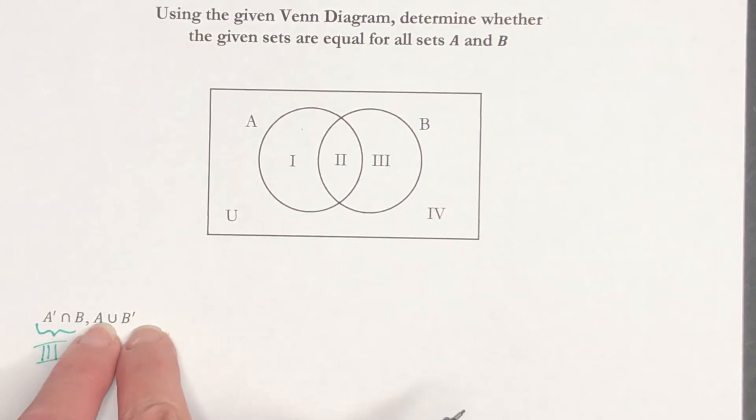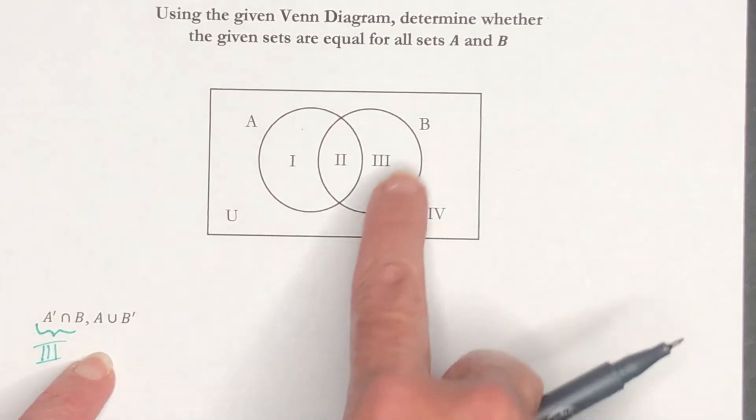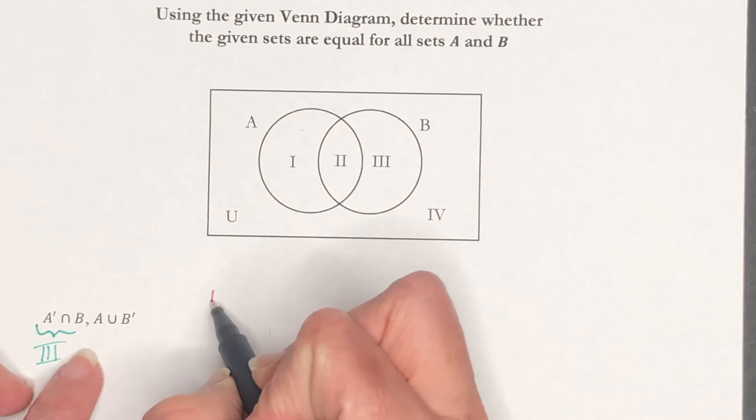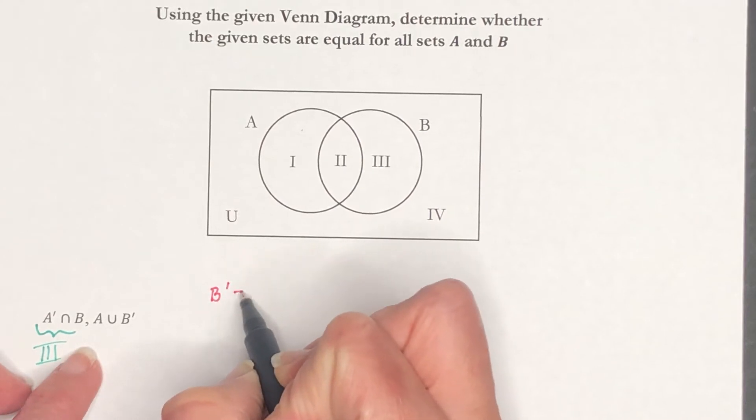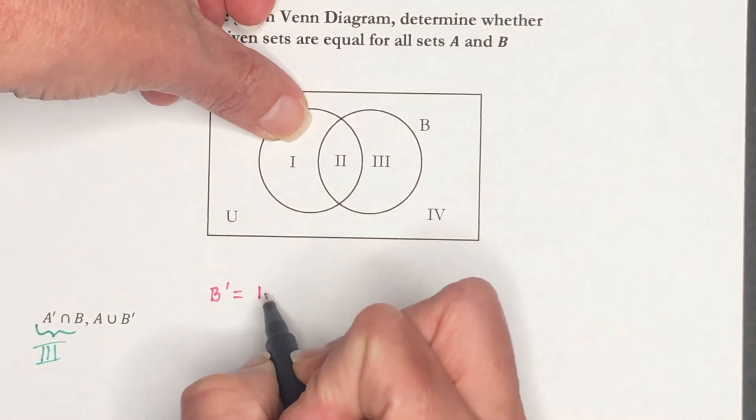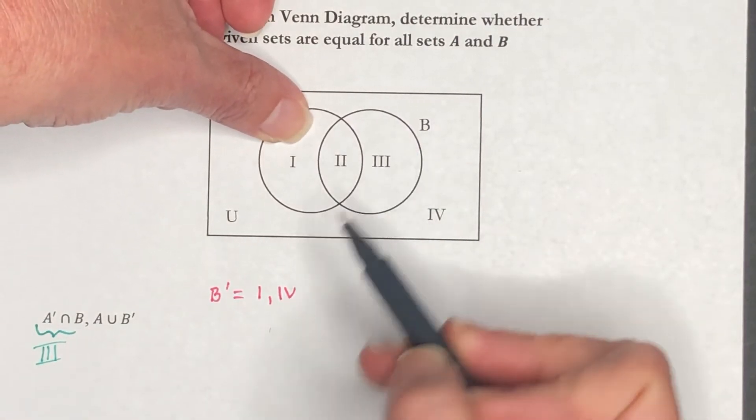Now for this one, A union B complement. Well, B complement, this one may be easier to write down. B complement would be regions 1 and 4. It's everything that is not in B.